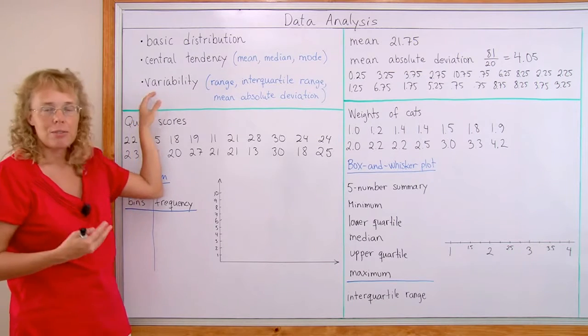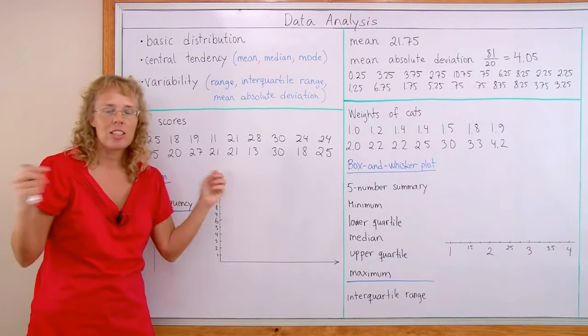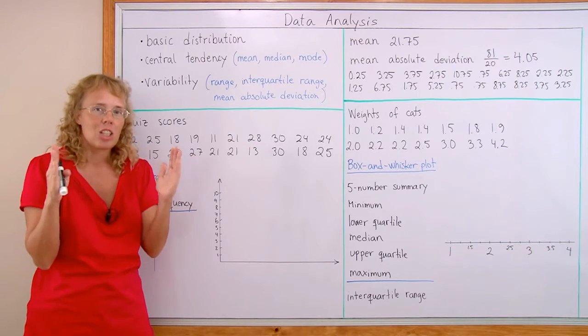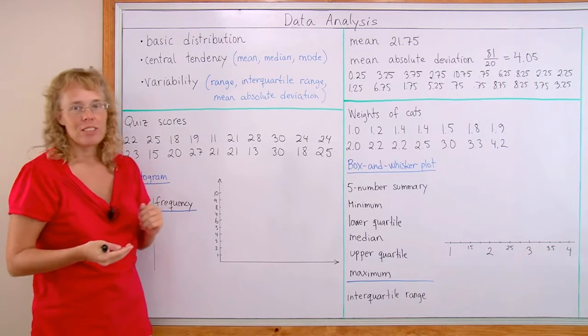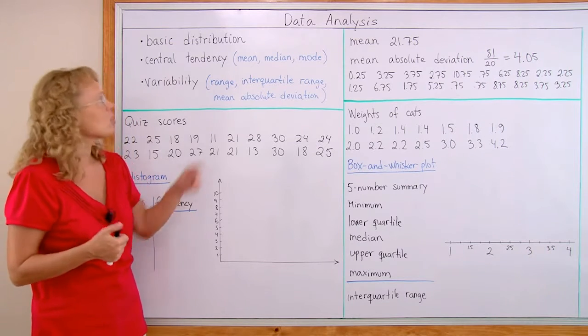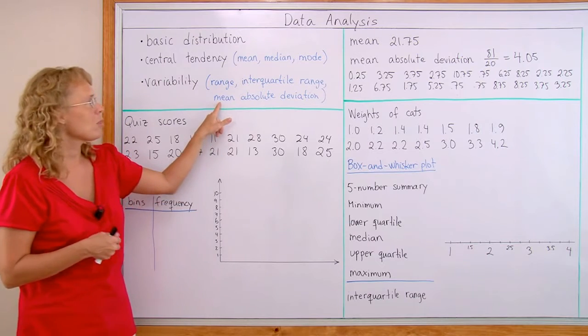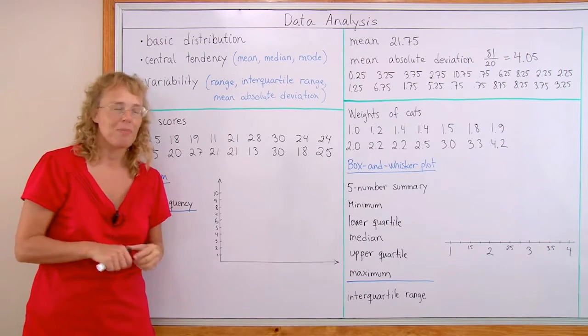And then variability within the data. Does it vary a lot? Is it spread out a lot? Or is it compacted together, close to the peak, so to speak? And again, there's several numbers we can calculate and use: range, interquartile range, and then mean absolute deviation, and there are even more.